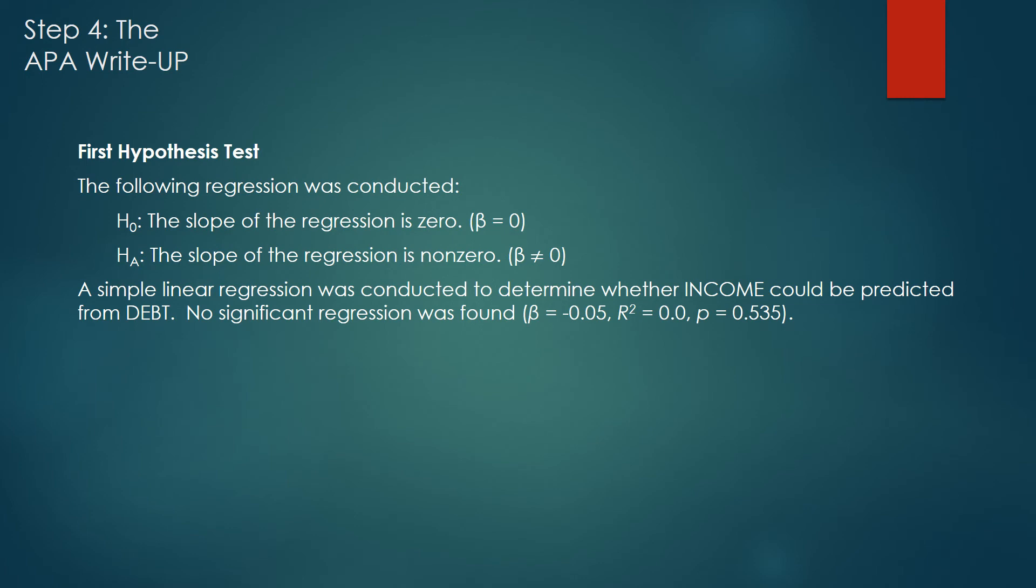Now we have all of our findings, and it is time to write them up using APA format. You open with a level 2 heading stating the hypothesis test, and then follow up with the test. After you state the test, you follow up with what actually happened as a result of conducting the test.